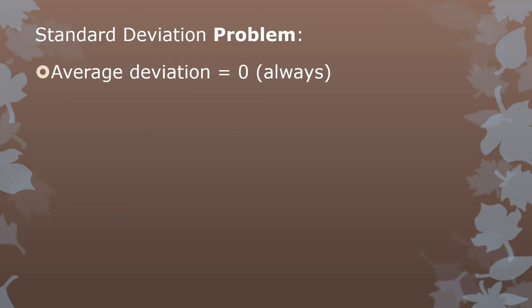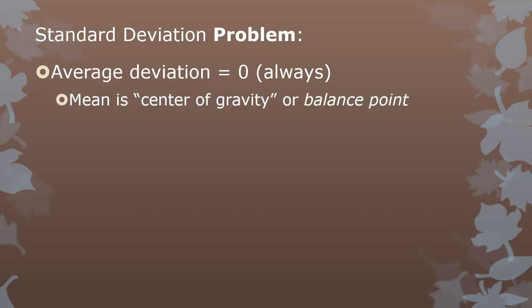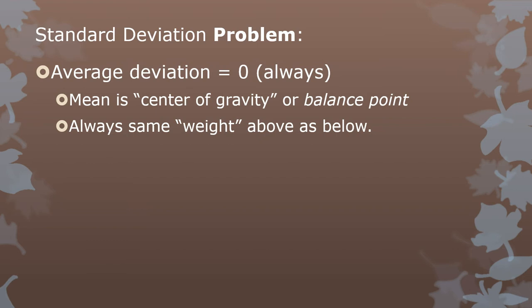That seems completely logical, but you run into a problem: the average deviation from the mean is always zero. Mathematically you can prove it always has to be zero. When you calculate a mean, it's the center of gravity or balance point in your data — there's always the same weight of numbers above the mean as below it. So the sum of the positive deviations always exactly cancels out the sum of the negative deviations.